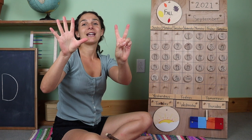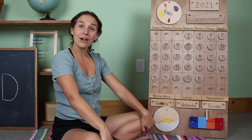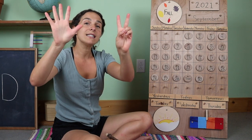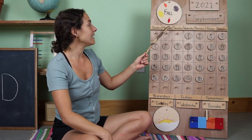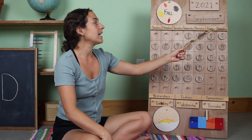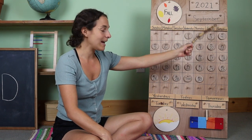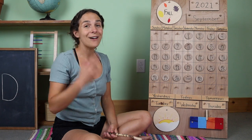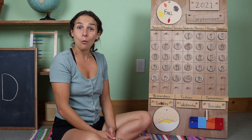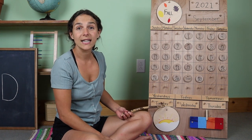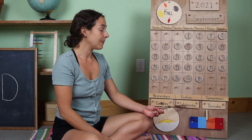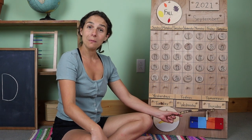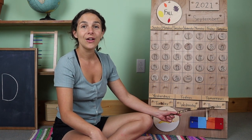Let's hold up seven fingers like this for the day of the week song, and you can sing along with me if you know the words. There are seven days, there are seven days, there are seven days in a week. Sunday, Monday, Tuesday, Wednesday, Thursday, Friday, Saturday. Let's go down to the bottom of the chart and go over the days together. Listen for the sound that the day starts with and you can tell me what day it is. Yesterday was T — Tuesday. That means that today is W — Wednesday. Tomorrow will be TH — Thursday.